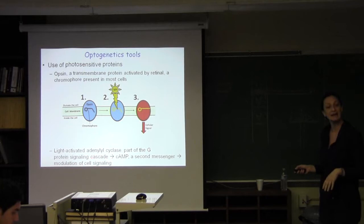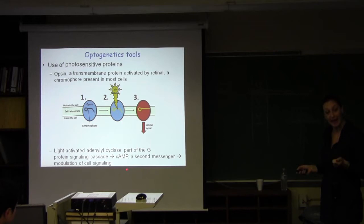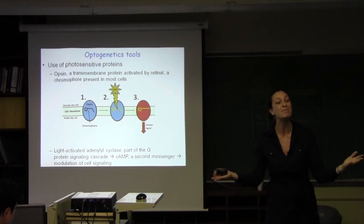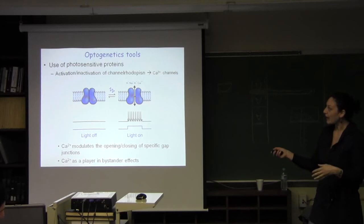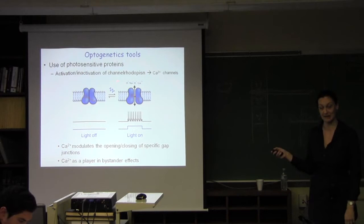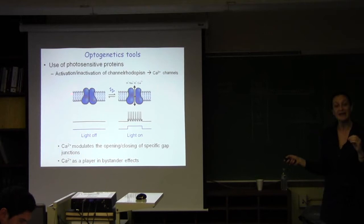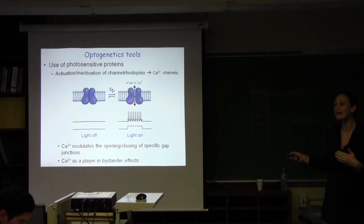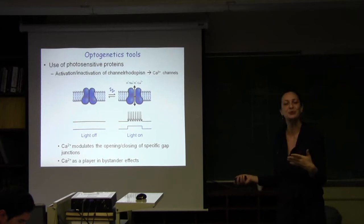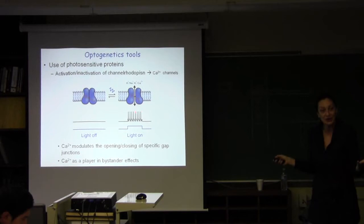When the light comes, this chromophore is activated, and then it activates opsin that gives rise to a specific cellular signal. For example, there are light-activated adenyl cyclase that many of you might know are part of the G protein signaling cascade, which is one of the major signaling cascades that our cells use for many endpoints.